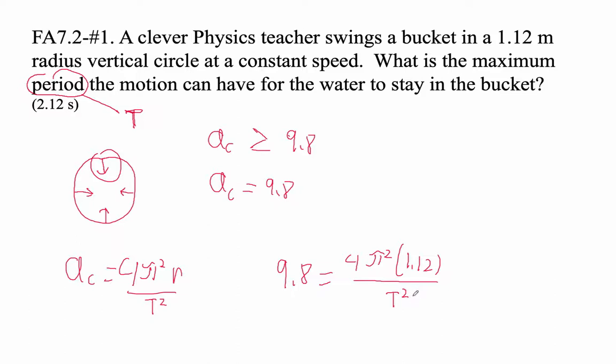All right, I think we can do this. What do we do? I think we cross multiply. So let's go 9.8t² equals 4π² times 1.12. Then I think we divide by 9.8. I think my computer is getting ready to take off here.